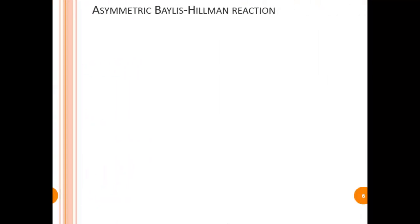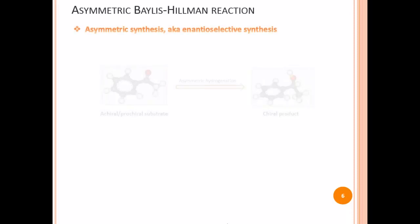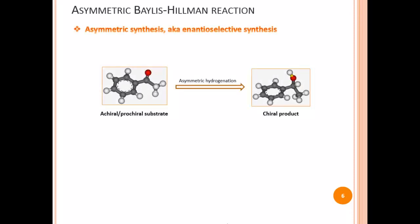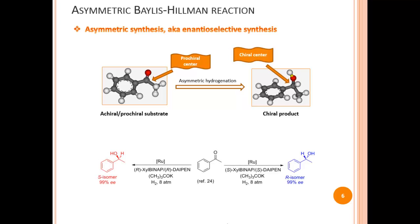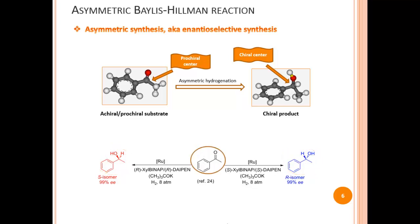The Bayliss-Hillman reaction yields chiral molecules; hence the asymmetric Bayliss-Hillman reaction stereoselectively generates various chiral products. Before discussing asymmetric Bayliss-Hillman reactions, let's briefly review asymmetric synthesis, also known as enantioselective synthesis. In asymmetric synthesis, a substrate with a prochiral center is converted to a product with a chiral center — for example, an asymmetric hydrogenation reaction selectively produces one of two mirror-image chiral molecules from the same achiral substrate in the presence of a chiral catalyst.